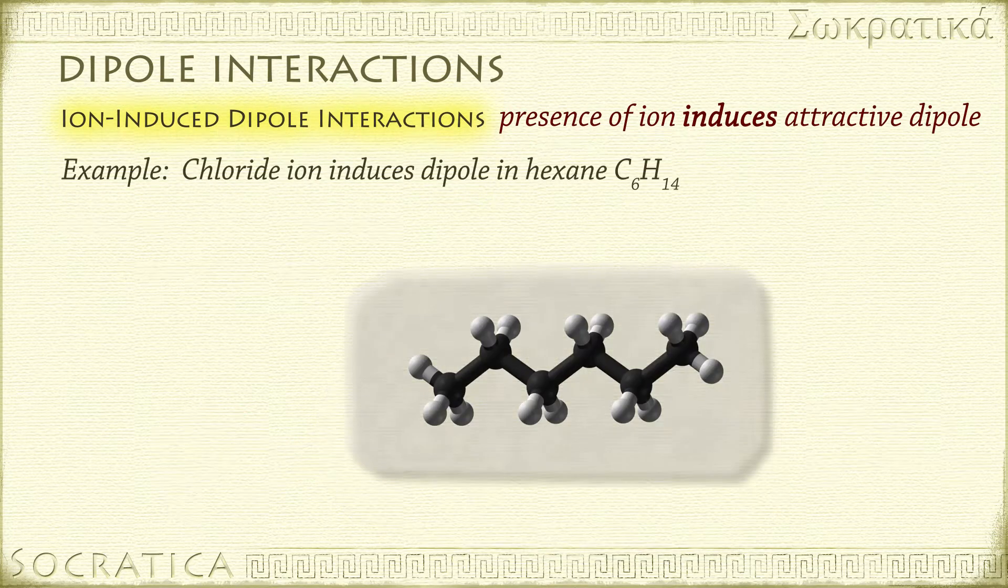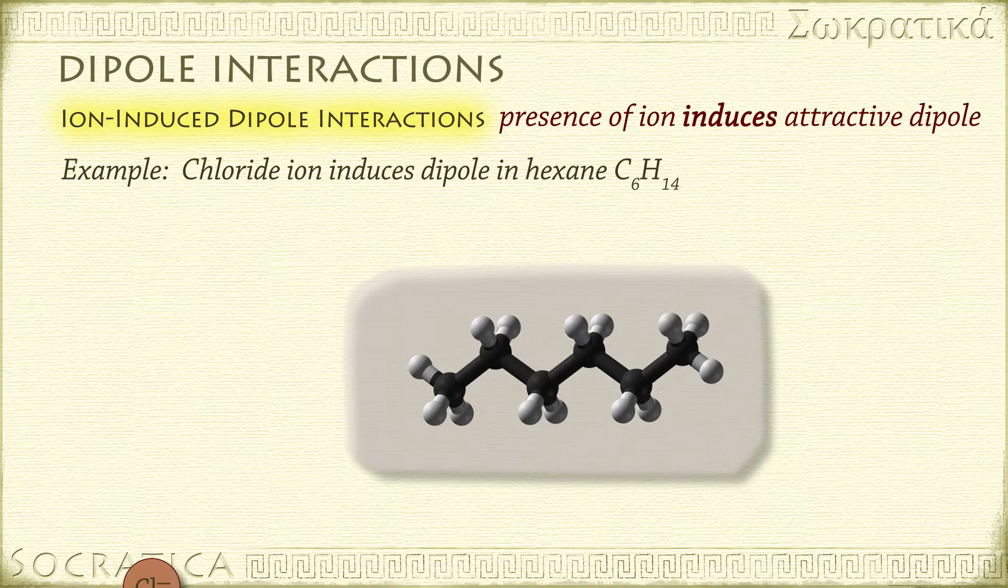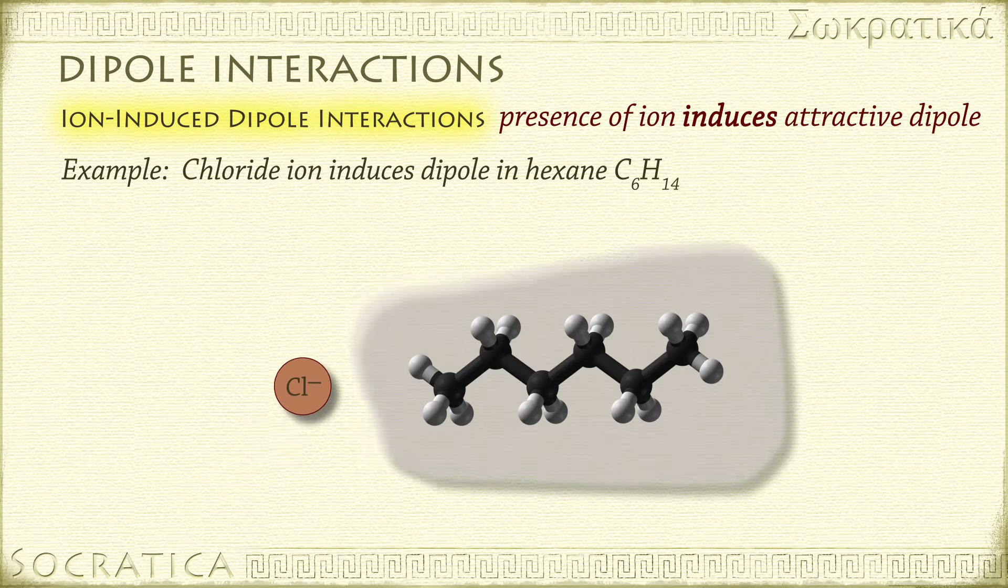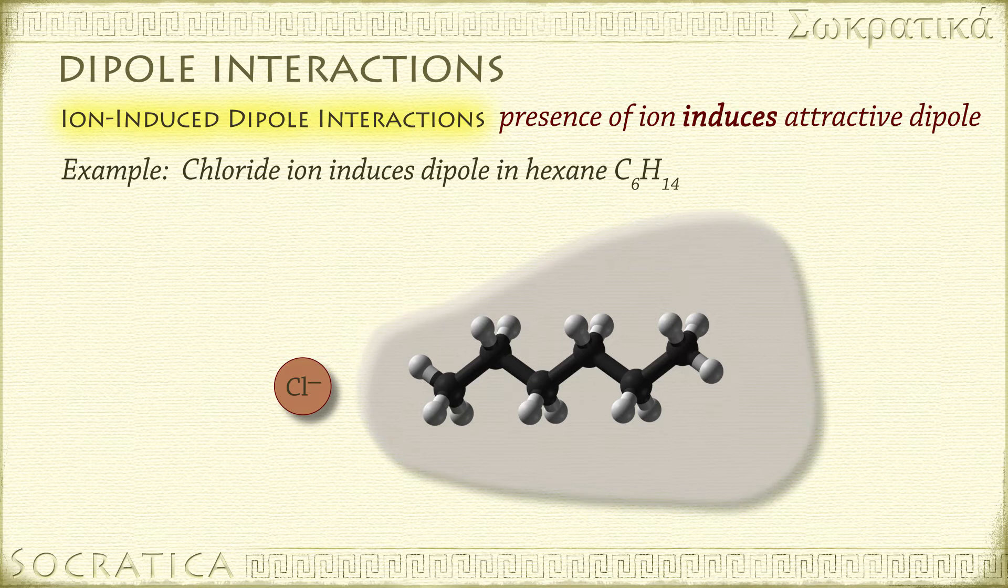For example, as this chloride ion, Cl-, approaches hexane, C6H14, a nonpolar molecule, the negative charge on the ion slightly distorts the electron cloud.